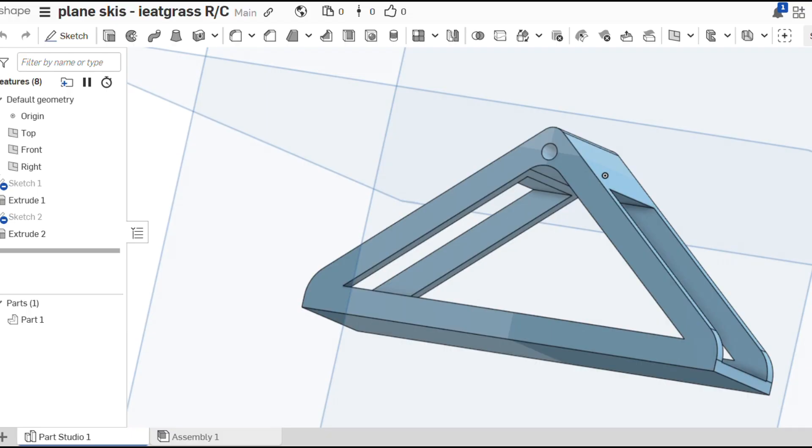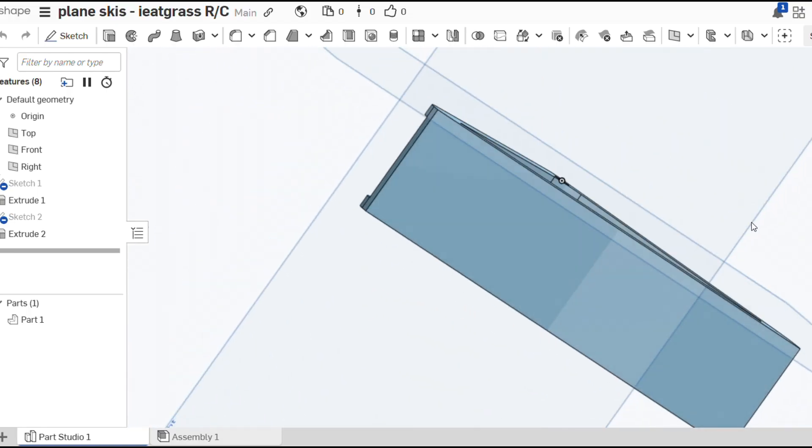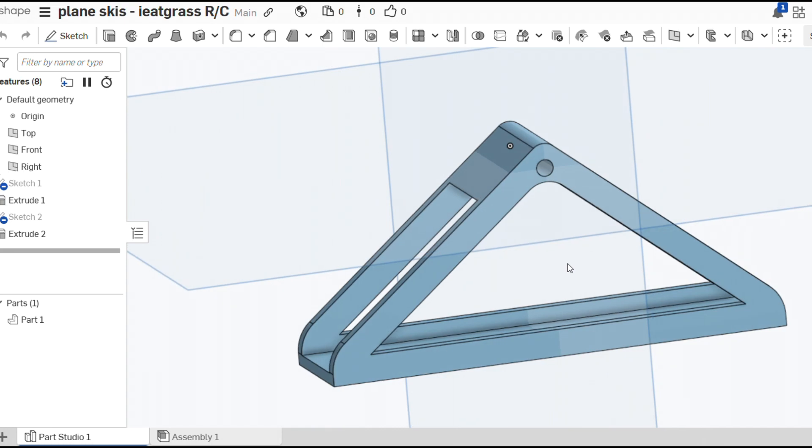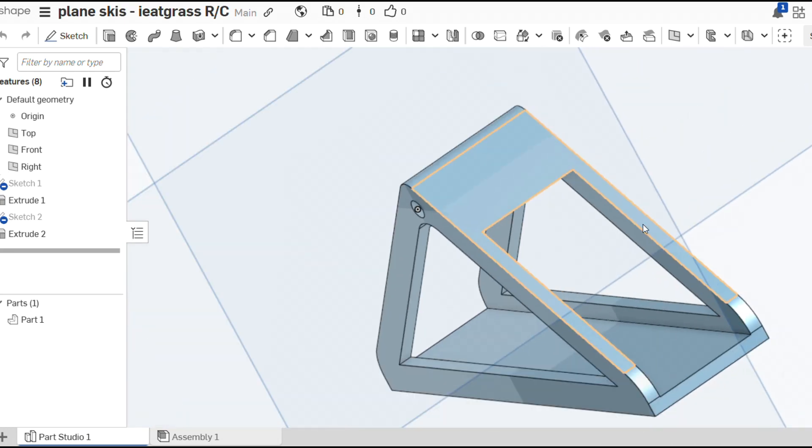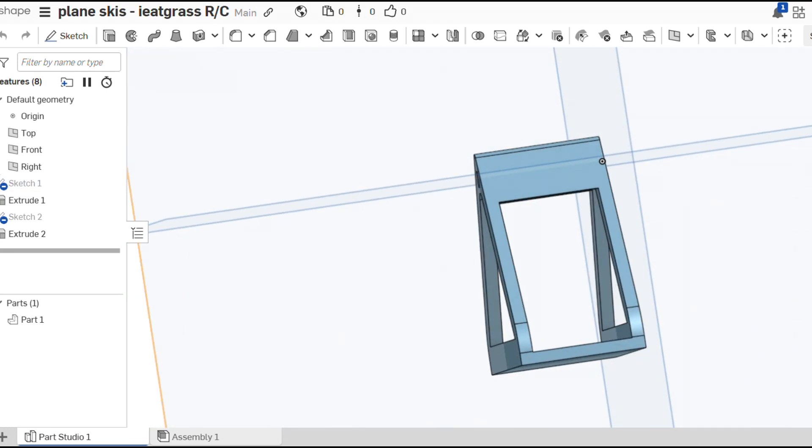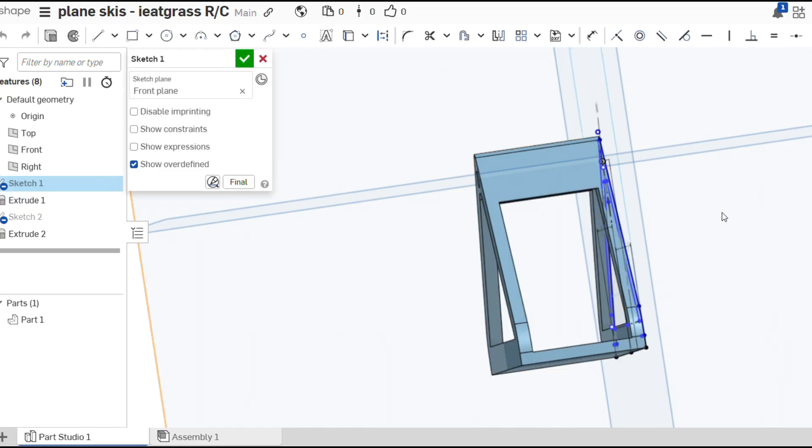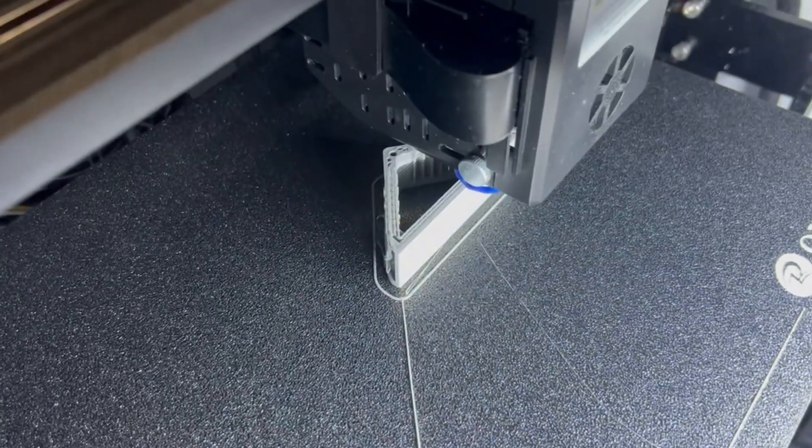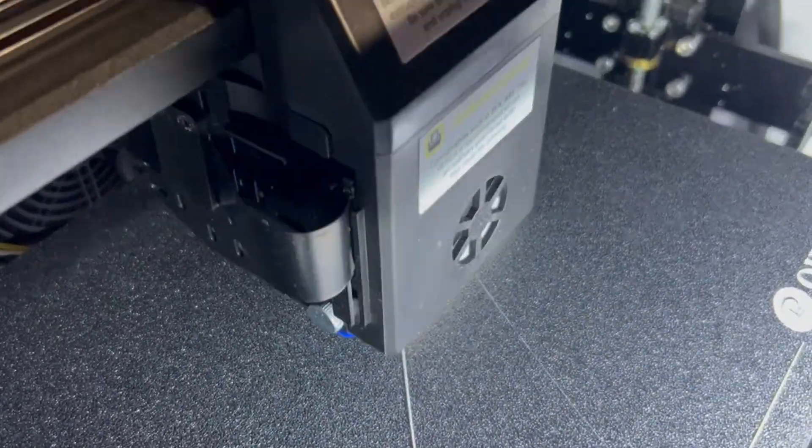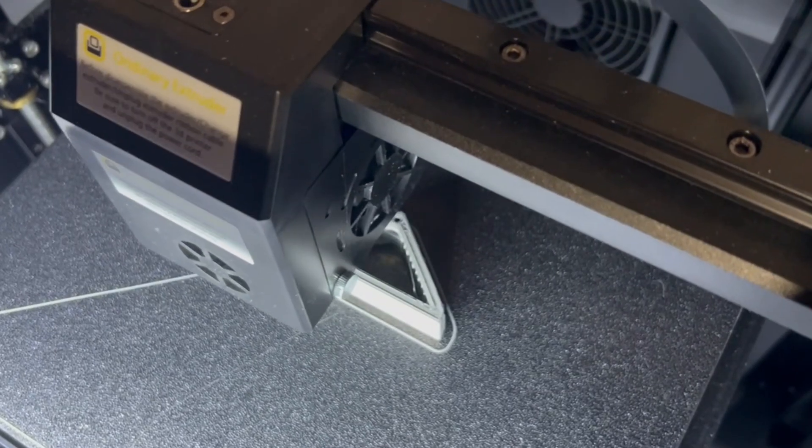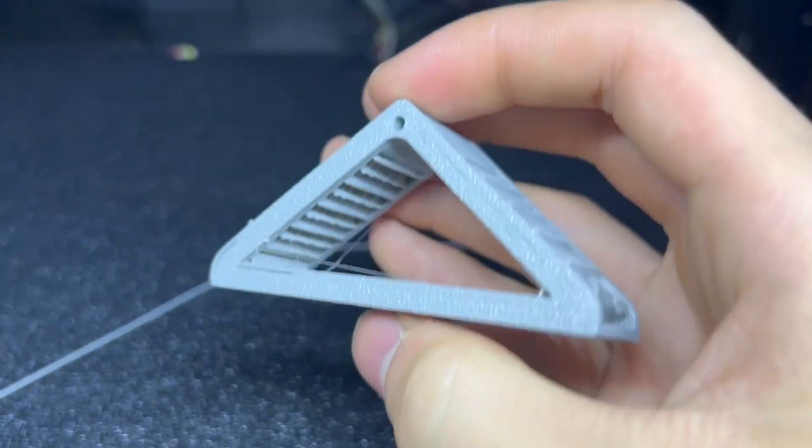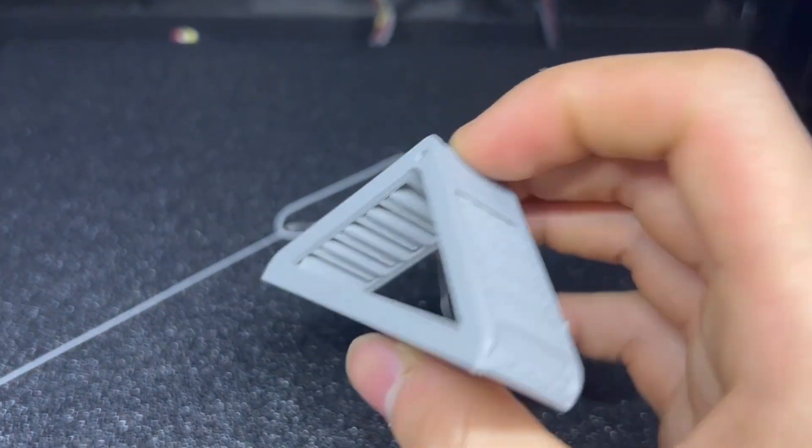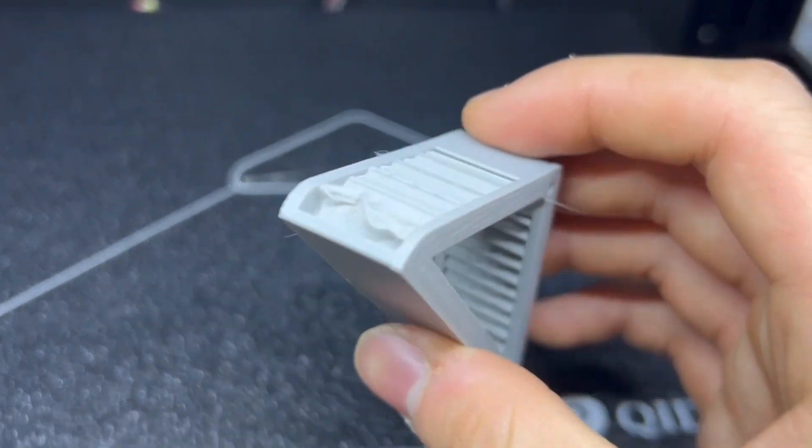With now knowing that this plane could fly pretty well, it is time to make the skis. To start, I went to Onshape and designed these brackets that will connect to the landing gear wire and then to the actual foam skis. If you want to change or have access to any of these parts, all you have to do is create a free Onshape account and search up the name for these documents. Onshape is cloud-based, meaning all my designs are public to anyone that has an account. All these prints are going to be printed on my Quidi XCF Pro. These parts are quite small, so I decided just to use some standard PLA. For some reason, after printing the first bracket, it failed twice after that, most likely because I forgot to clean off the nozzle after the first print.